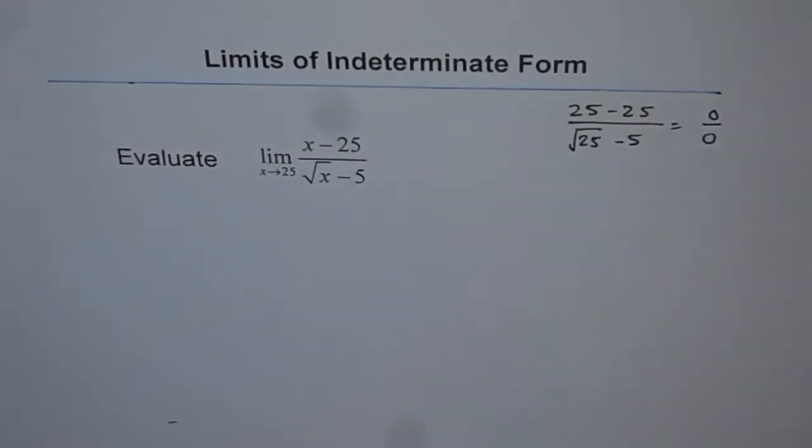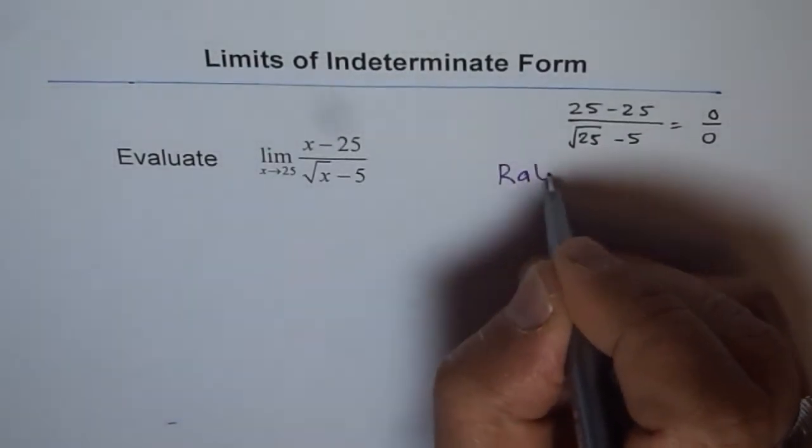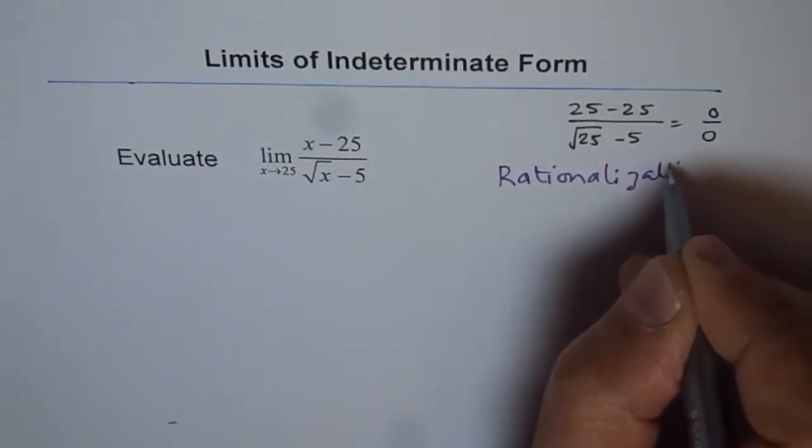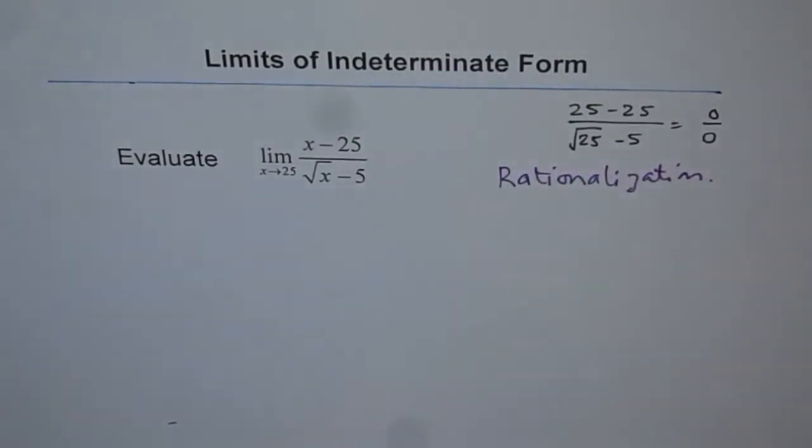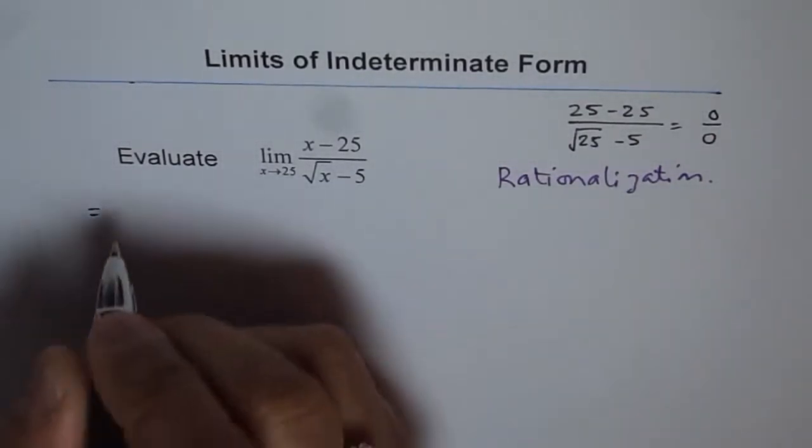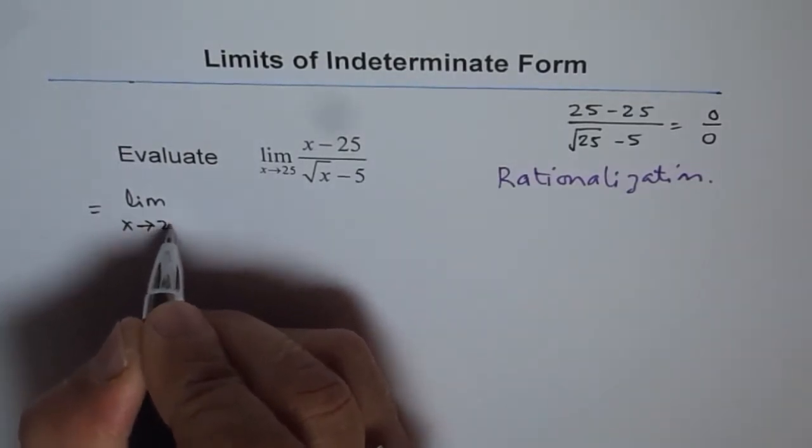So whenever there is a square root, what do you think we should use? We should use the technique rationalization. So that is the technique which we are going to use again. And I hope you get it this time. So help me out. You can actually stop the video and do it yourself and then look into my solution.